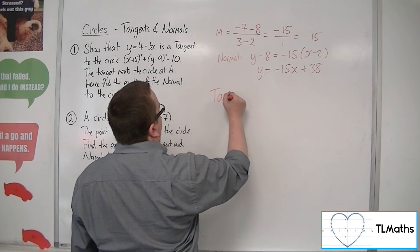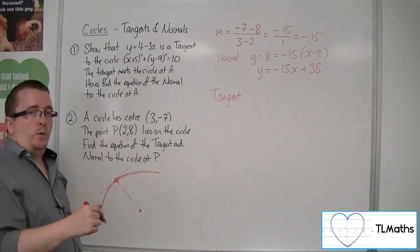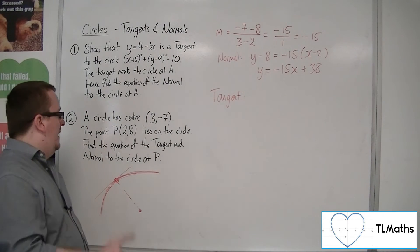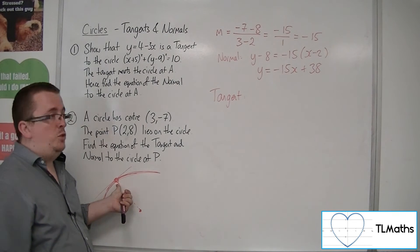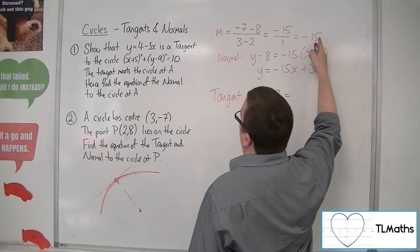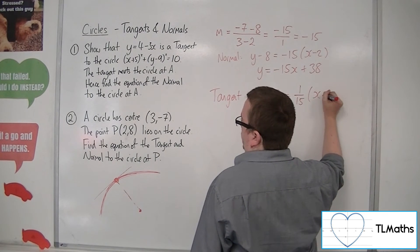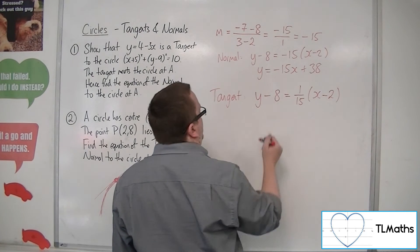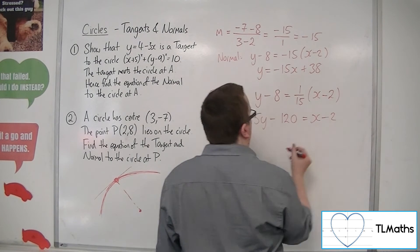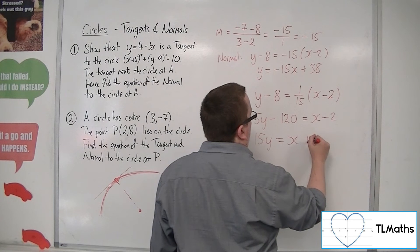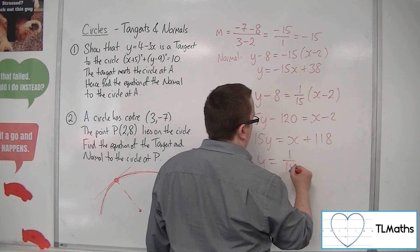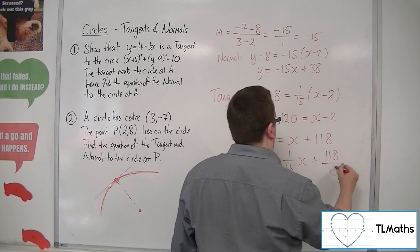Now, as for the tangent, I can use the same y minus y1 equals mx minus x1, but I must make sure I use the negative reciprocal of minus 15 and I substitute in the point here, the point P, 2, 8. So, y minus 8 is equal to the negative reciprocal of minus 15, so 1/15, x minus 2. So, if I multiply everything by 15, I get 15y minus 120 is equal to x minus 2. So, 15y is equal to x plus 118, adding 120 to both sides. And so, y is equal to 1/15 x plus 118 over 15.